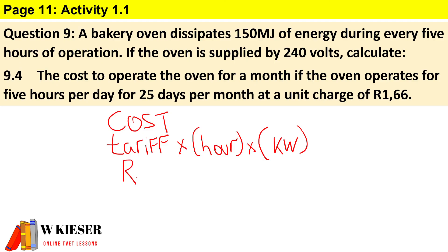So the tariff is R1.66, the number of hours is 5 hours per day times 25 days, and the power is 8,333.333 watts. To convert to kilowatts, you divide by 1000.